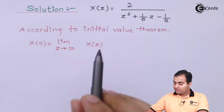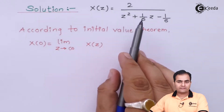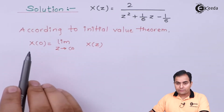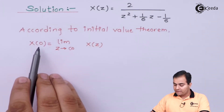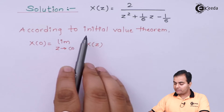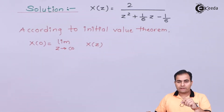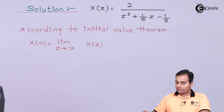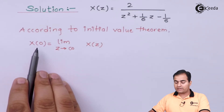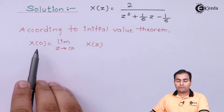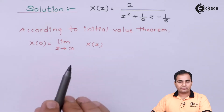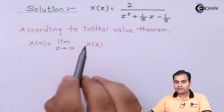First, the solution. X(Z) is given as 2 / (Z² + (1/6)Z − 1/6). We will calculate the initial value first and then move to the final value. According to the initial value theorem, the formula is X(0) = limit as Z tends to infinity of X(Z). We are going to substitute the value of X(Z) here.